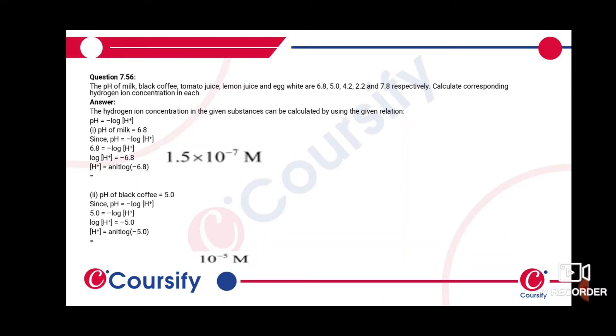The pH of black coffee is 5. The concentration of H+ is equal to antilog of -5, which is 10^-5 M.